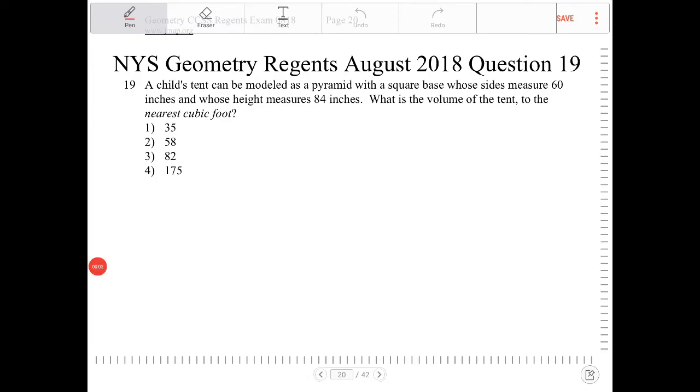A child's tent can be modeled as a pyramid with a square base whose sides measure 60 inches and whose height measures 84 inches. What is the volume of the tent to the nearest cubic foot?